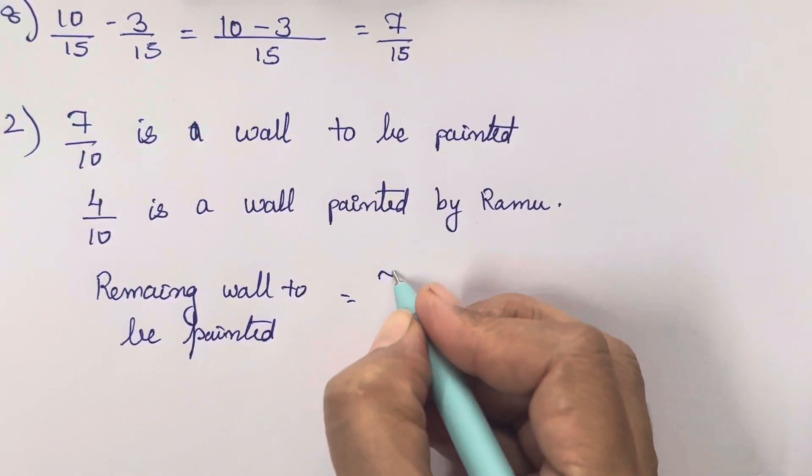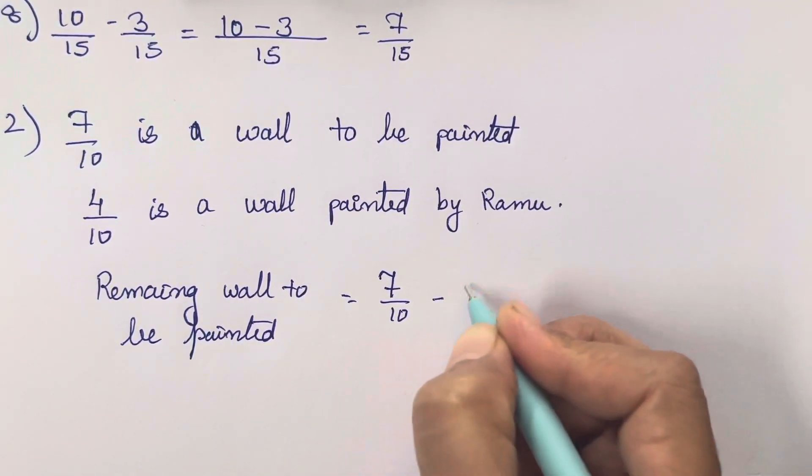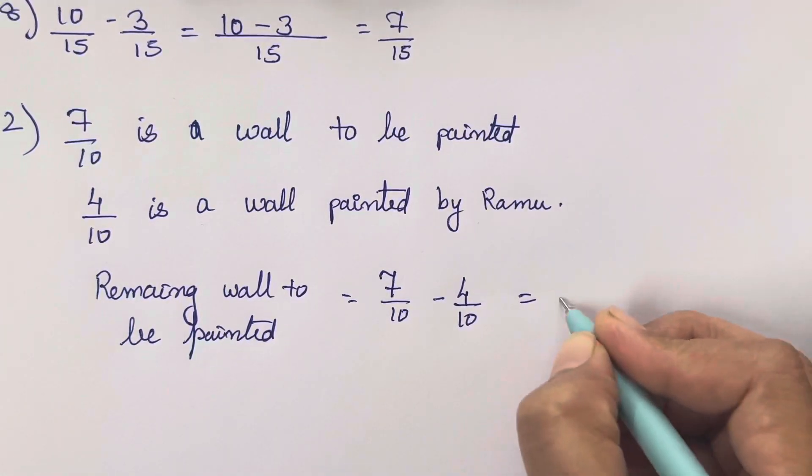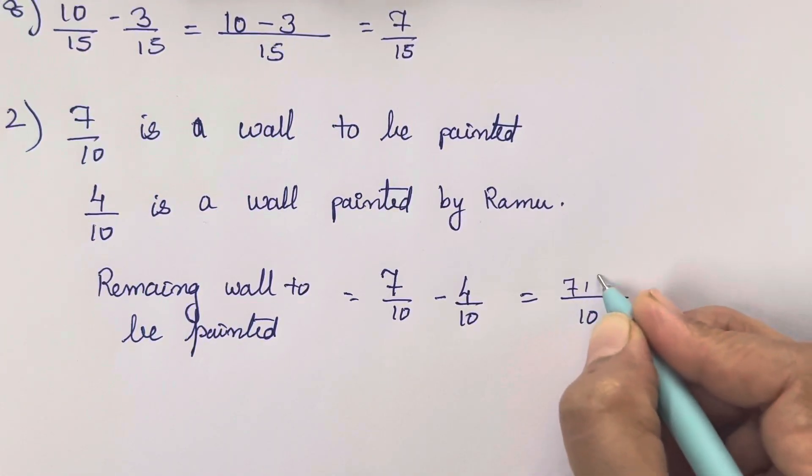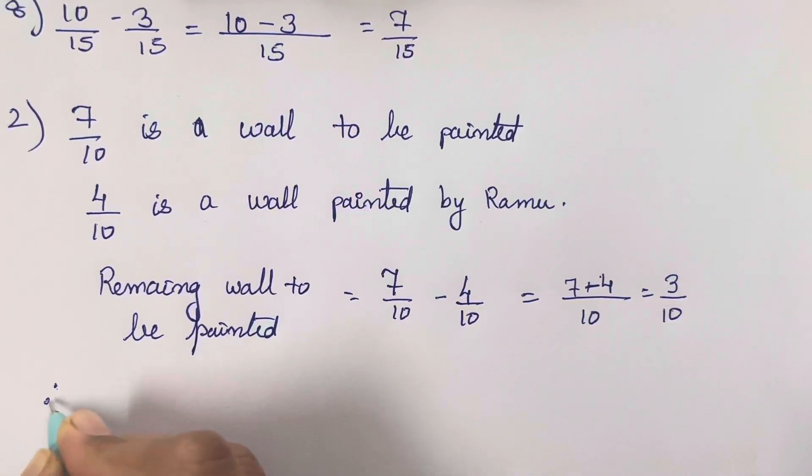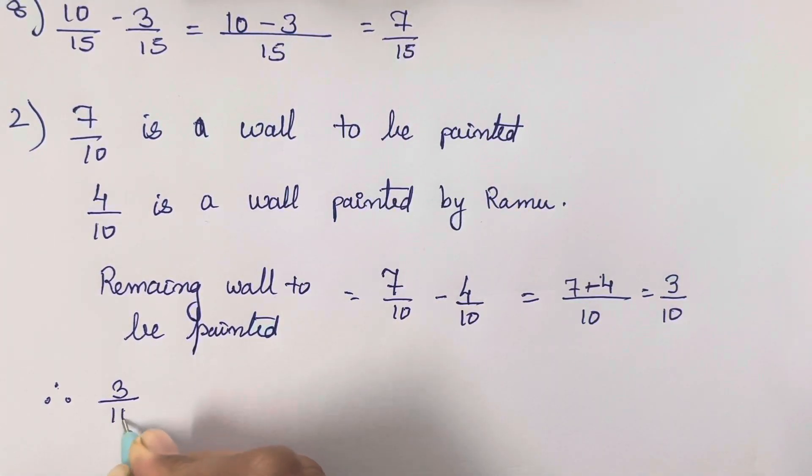Remaining wall to be painted is going to be 7 upon 10 minus 4 upon 10. Why minus? Because see, the wall is of 7 upon 10, something, the wall is of that much ratio, okay, 7 upon 10, and 4 upon 10 is the wall that is being painted by Ramu. So how much is remaining? That we have to calculate. So again, the same step we will solve over here.